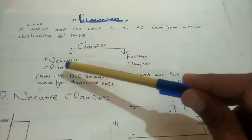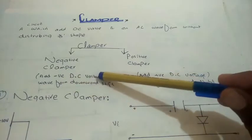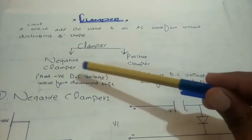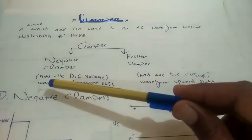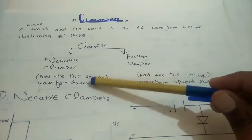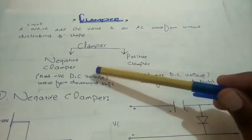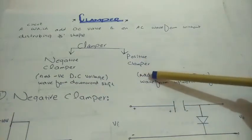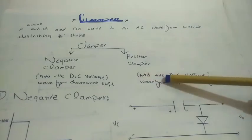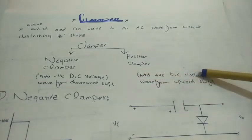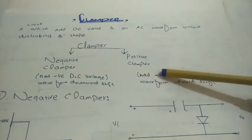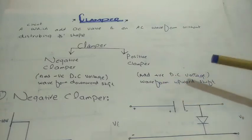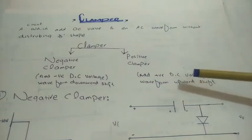In a negative clamper, a negative DC voltage is added, so the waveform shifts downward along its axis. In a positive clamper, a positive DC voltage is added, so the waveform shifts upward along its axis.